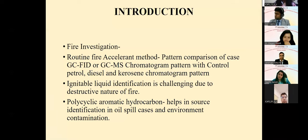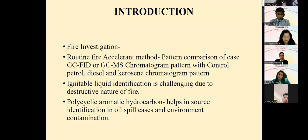Samples received in the lab come in two types: fire debris and samples of human origin. For fire debris, the crime was committed at a property. In human burning cases — such as bride burning — hair and skin samples are received. In routine fire examination, samples are collected, extracted, and analyzed with GC-MS and GC-FID, and the pattern obtained is compared with that of control petrol, diesel, and kerosene.